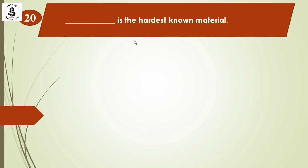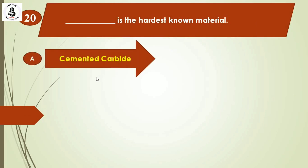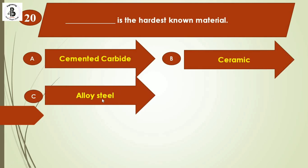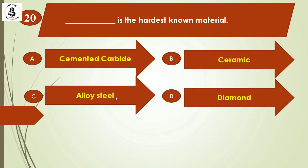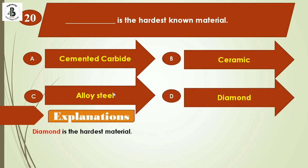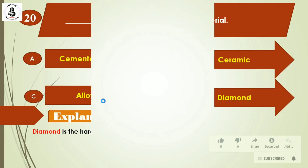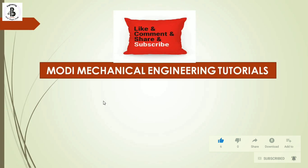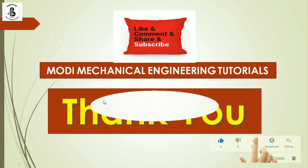Last question: Which is the hardest known material? Option A: cemented carbide. Option B: ceramics. Option C: alloy steels. Option D: diamond. We all know that diamond is the hardest material. The right answer is option D. I hope you liked this video. If you did, please subscribe and share — Modi Mechanical Engineering Tutorials. Thank you so much and keep watching.